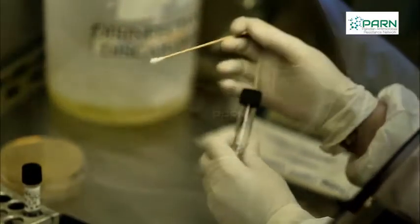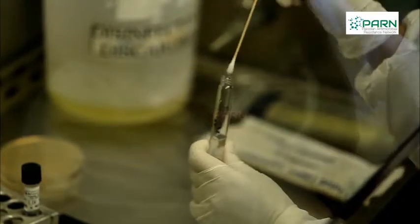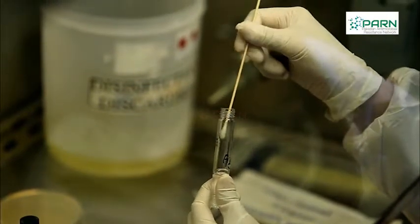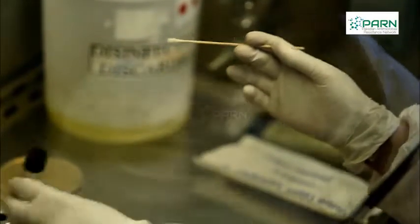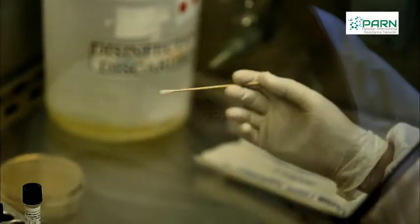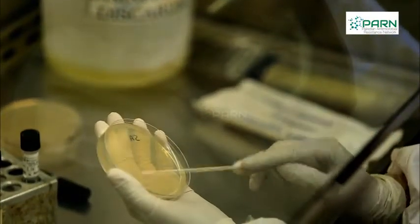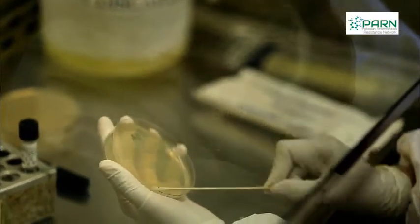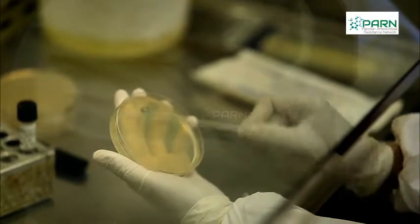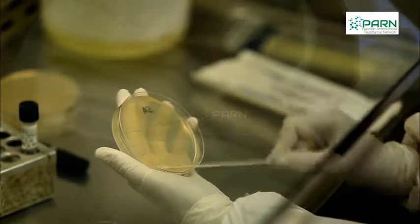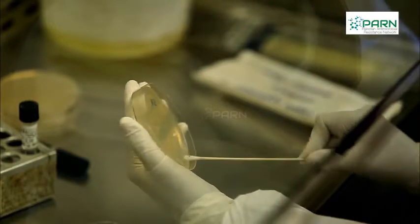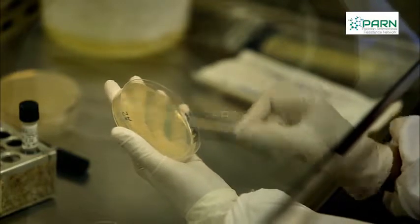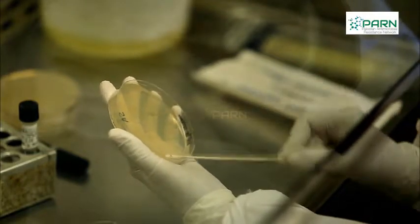Dip a sterile swab into the inoculum tube. Remove excess fluid by rotating the swab against the walls of the tube. Inoculate the surface of Mueller-Hinton agar by streaking the swab three times over the entire agar surface, rotating the plate approximately 60 degrees each time to ensure even distribution of inoculum. Then let the agar surface dry.